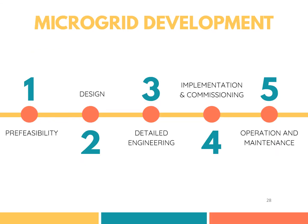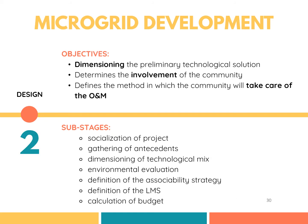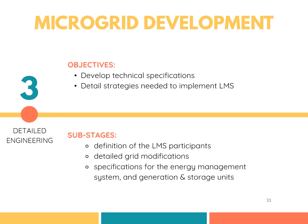The microgrid development has five stages. First, the pre-feasibility aims to quantify the technical, economic, and socio-environmental feasibility of the execution of the project. Data about the community is gathered, and techno-economic solutions are evaluated to define the best solution. The second step is the design, which aims at dimensioning of the preliminary technological solution, determining the involvement of the community, and defining the method in which the community will take care of O&M. After the design, detail engineering comes in to develop technical specifications like grid modifications, specification of energy management system, generation and storage units, and detail strategies needed to implement elements.